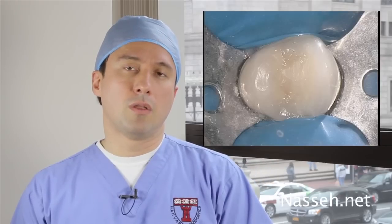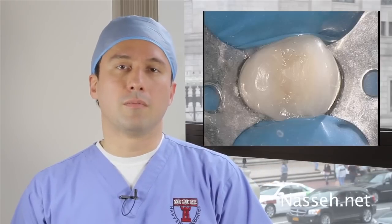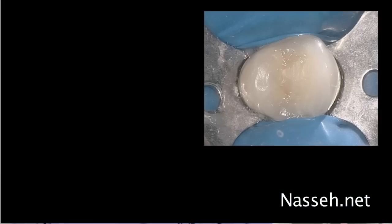Removal of the existing crown for the retreatment would be ideal as it allows easier access to the silver point. But since a provisional crown was not readily available, we elected to retreat the silver point through the crown, although it is more difficult access-wise and would require high magnification and illumination as well as microsurgical techniques.